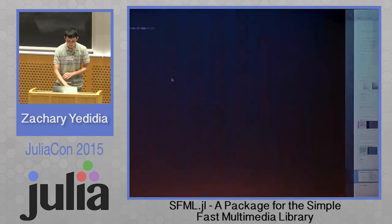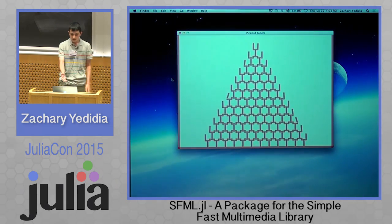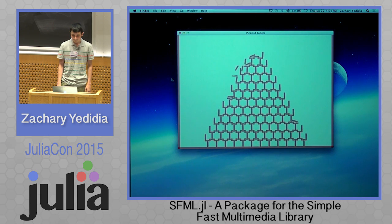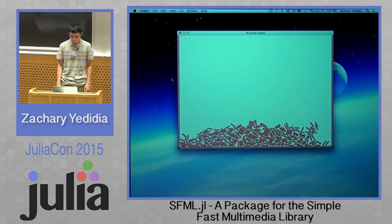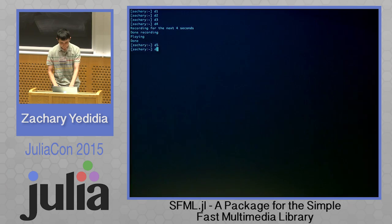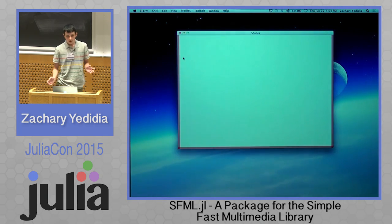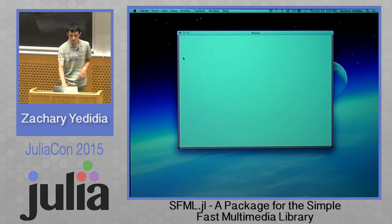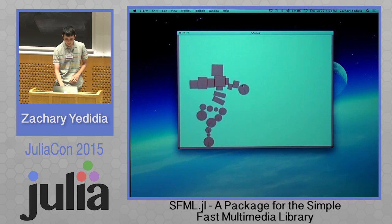I've got two demos. The first one is just a pyramid falling over. The second one uses SFML not just for drawing but also for user input. So if I left click, it makes circles, and if I right click, it makes squares.